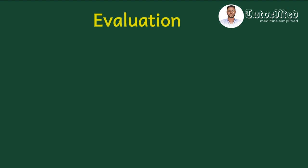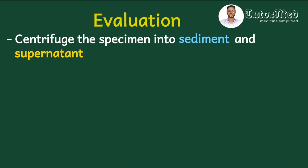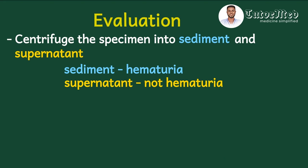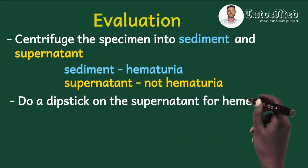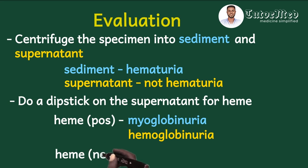Given several causes of red urine, how do we evaluate the complaint? After clinical history and physical exam, proceed to urinalysis. First, centrifuge the specimen into sediment and supernatant. If the red color is in the sediment, it is hematuria. If it is in the supernatant, it is not hematuria. Then perform a urine dipstick heme test on the supernatant. If heme is positive, it is either myoglobinuria or hemoglobinuria. If heme is negative, the red color was caused by medications or meals.